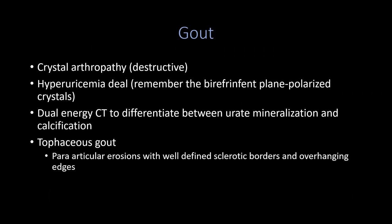Gout is a crystal arthropathy that is very destructive. Classic radiographic findings include tophaceous gout with para-articular erosions related to hyperuricemia. Remember the birefringent negatively polarized crystals tested on exams. Dual energy CT can now differentiate urate mineralization from calcium deposits. Three buzzwords to remember: para-articular erosions with well-defined sclerotic borders and overhanging edges.